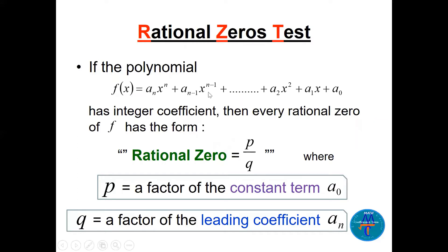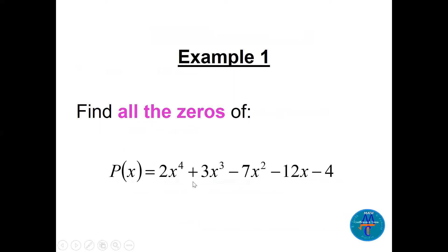The Rational Zeros Test: if we have any polynomial, the rational zeros are P over Q, where P comes from the factors of the constant term a₀, and Q comes from the factors of the leading coefficient aₙ. Once we find P and Q, we divide every P by every Q to get possible rational zeros, then we try them on the function.